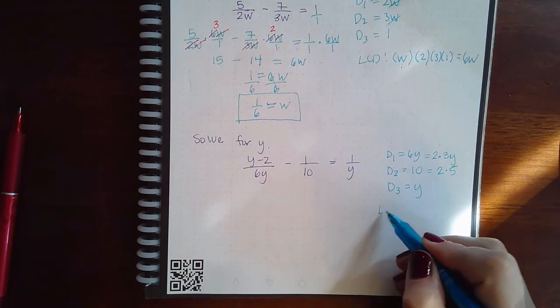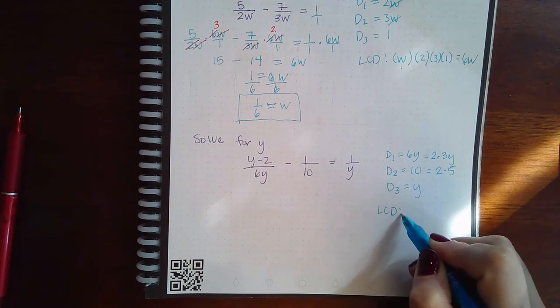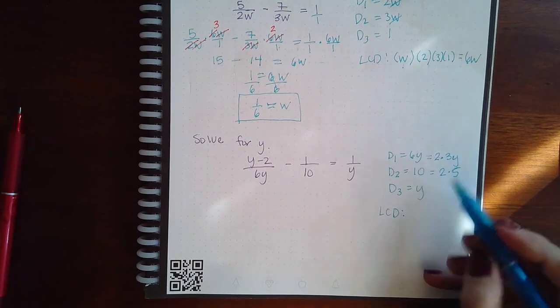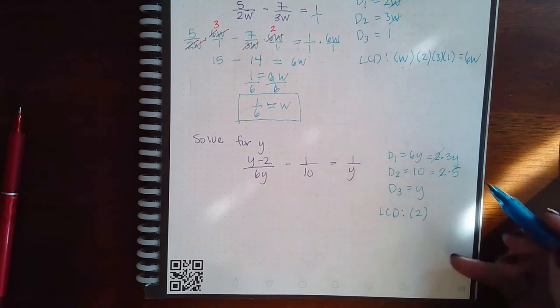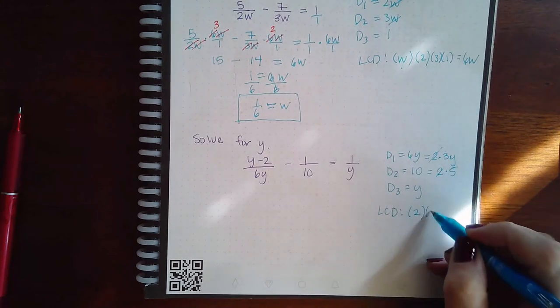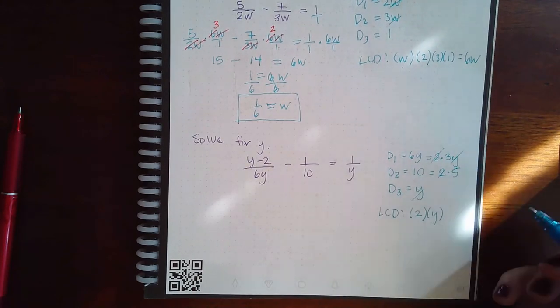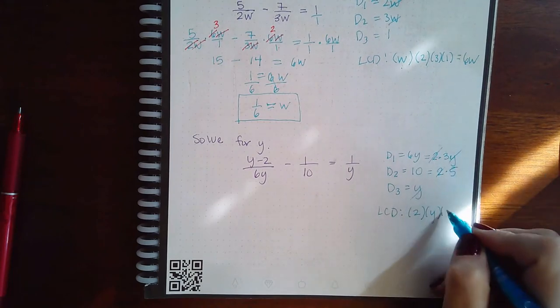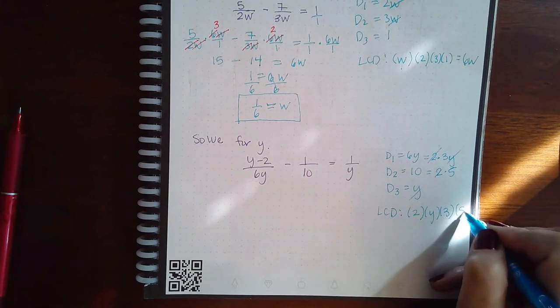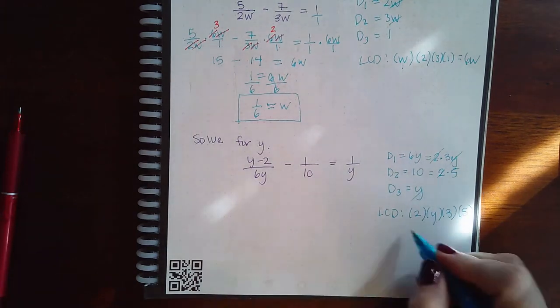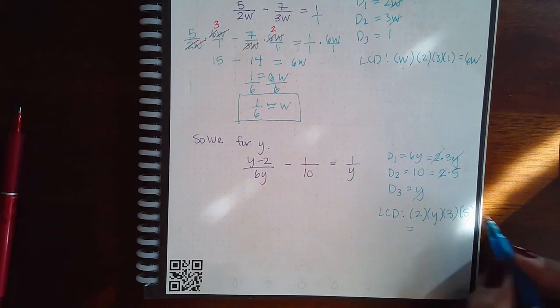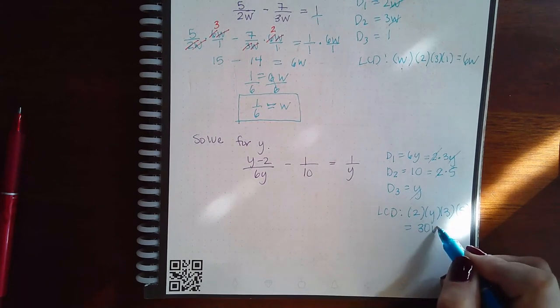So then that means my LCD is going to be what they have in common. I see that these two have a 2 in common, so those are out of the picture. These two have a Y in common, so that's now out of the picture. And then do I have any distinct factors? I do. I have the 3, and then I have the 5 that are distinct from the other denominators. So what do I get when I multiply all of that together? I end up getting 30Y.